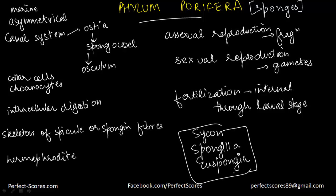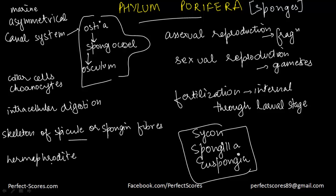Fertilization in poriferans is internal, and development is indirect — it has a larval stage which is very different from the adult in terms of morphology, shape, structure, and form. Common examples of Phylum Porifera include Sycon, Spongilla (a freshwater sponge), and Euspongia (the bath sponge used commonly).